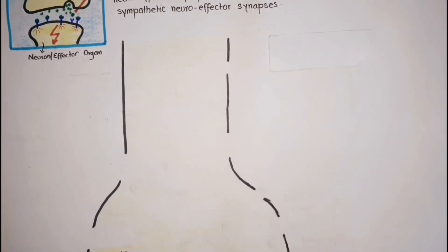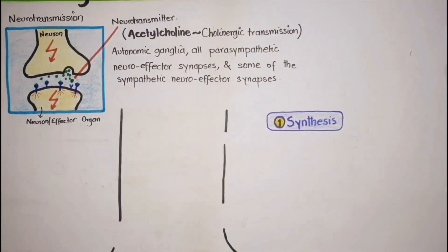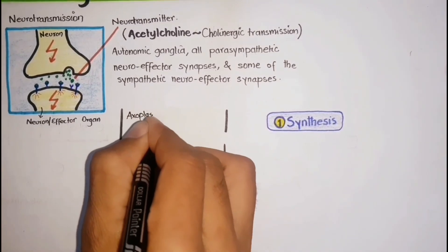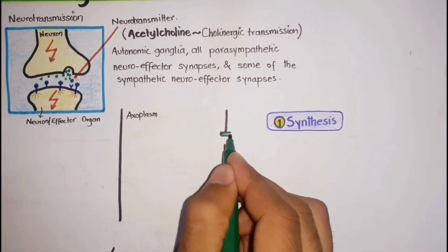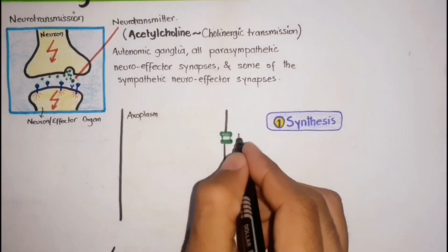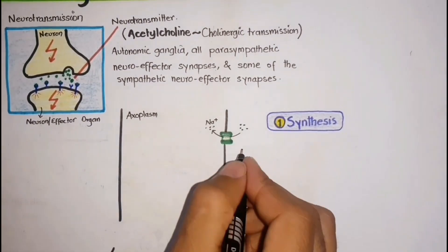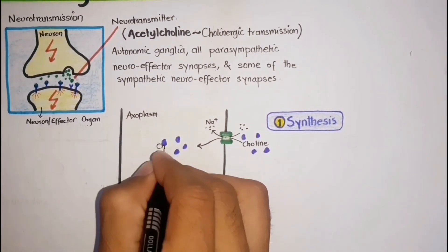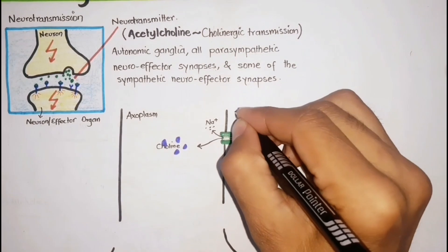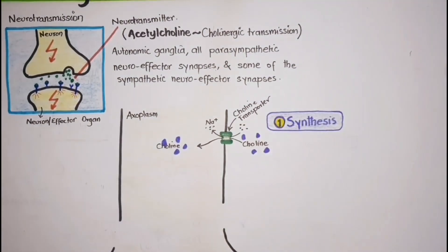The first step in cholinergic transmission is the synthesis of acetylcholine. Choline is a quaternary ammonium compound that is transported into the axoplasm of the cholinergic neuron by an energy-dependent carrier system that co-transports sodium and choline. The transporter involved is called the choline transporter.